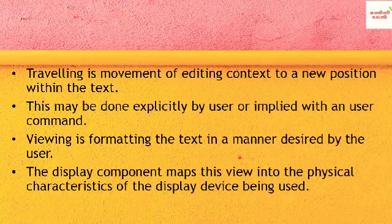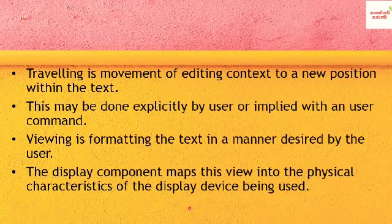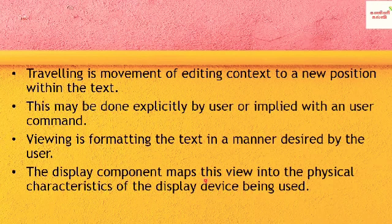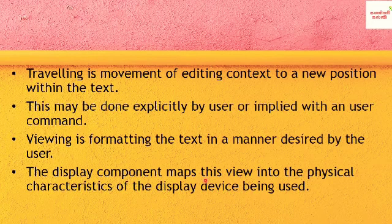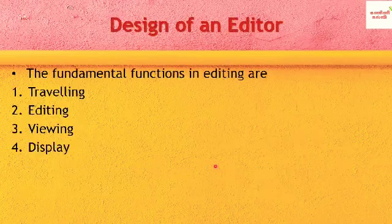Viewing is formatting the text in a manner decided by the user — when we edit, we can view the changes. The Display component maps this view into the physical characteristics of the display device being used. What we view is shown on the display device, such as a screen monitor. These are the four main functions of editor design.